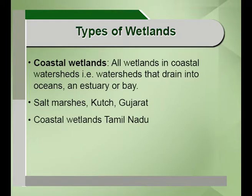Types of wetlands: these can be categorized into three types — coastal, inland and man-made wetlands. We will focus directly on the coastal and the inland wetlands.